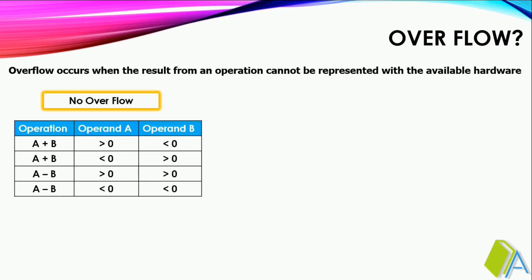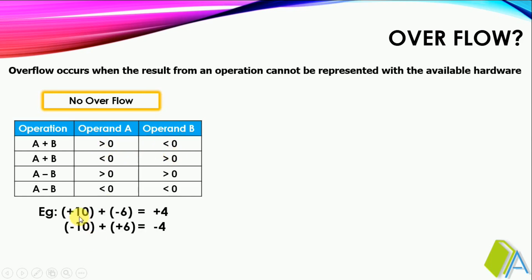What are the conditions for no overflow? We have two different cases for both addition and subtraction. In addition, overflow cannot occur when operands are of different sign — if one operand is positive and another is negative, for example plus 10 and minus 6, or minus 10 and plus 6. In both cases we don't have any overflow. In subtraction, overflow cannot occur when the signs of operands are the same.